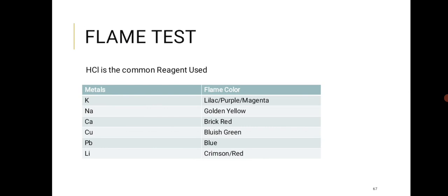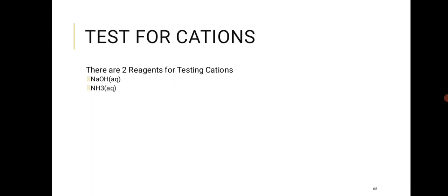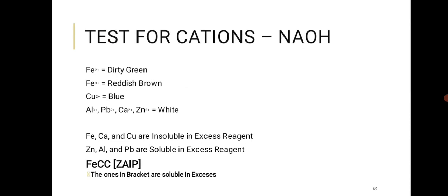NO2 forms a mixed acid when dissolved in water: HNO2 and HNO3. It is prepared by the decomposition of lead nitrate — preferred because it does not form moist crystals and the dry gas is produced cleanly. For the flame test, the most common colors to know: potassium gives lilac/violet; sodium gives golden yellow; calcium gives brick red; lithium gives red; copper gives blue-green; lead gives blue. The reagent used in flame tests is HCl.